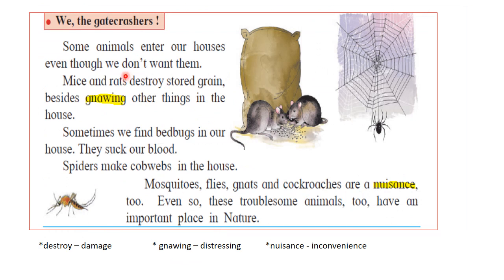Some animals enter our houses even though we don't want them — these are the gate-crashers. Mice and rats destroy stored grains and gnaw other things in the house. Bed bugs suck our blood. Spiders make cobwebs. Mosquitoes, flies and cockroaches are a nuisance too. Even so, these troublesome animals have an important place in nature and are part of our environment, so we should respect their presence.